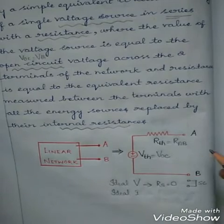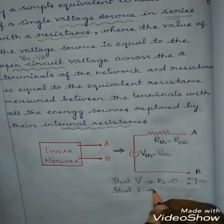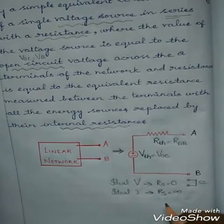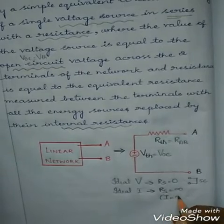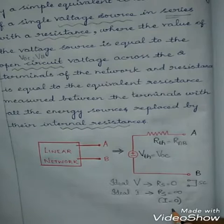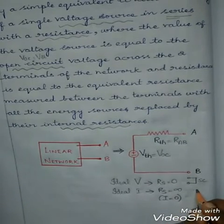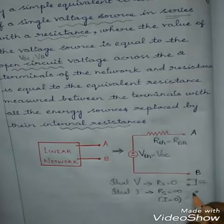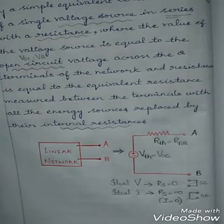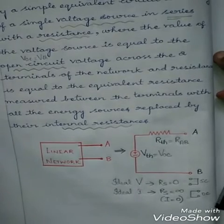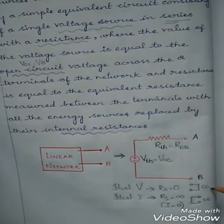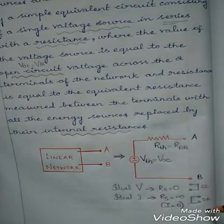What about the ideal current source? An ideal current source has internal resistance of infinity. When resistance is maximum, the current value is absolutely 0. So when R equals infinity, current is 0 and the circuit becomes an open circuit. To find RTH, replace the ideal voltage source by a short circuit and replace the ideal current source by an open circuit.